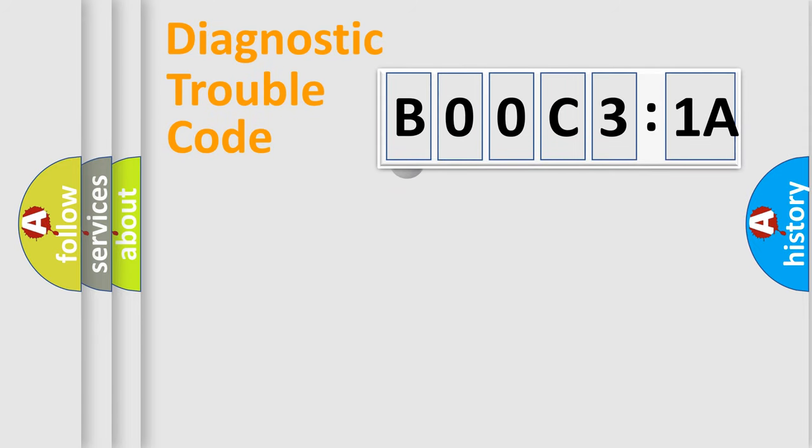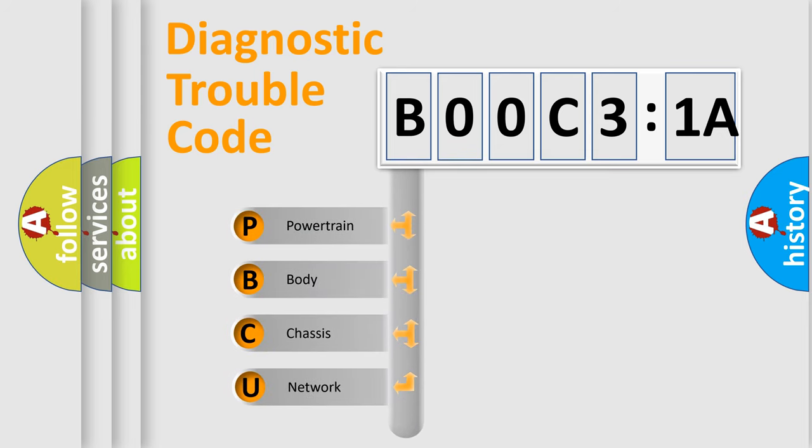First, let's look at the history of diagnostic fault code composition according to the OBD2 protocol, which is unified for all automakers since 2000. We divide the electric system of an automobile into four basic units.